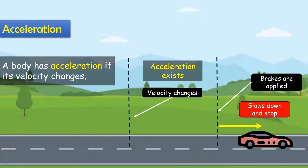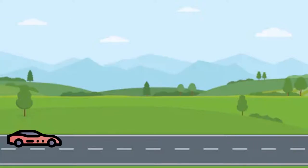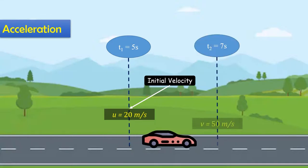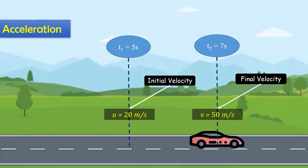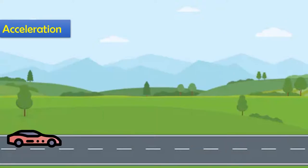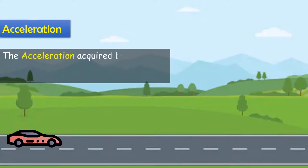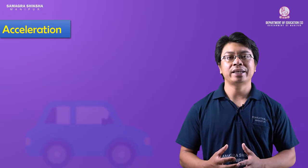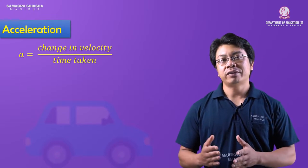For example: at time 5 seconds the velocity is 20 meters per second, and at time 7 seconds the velocity is 50 meters per second. The body's velocity changes, which means there is acceleration. Mathematically, acceleration equals change in velocity divided by time taken.